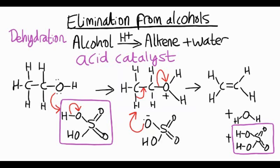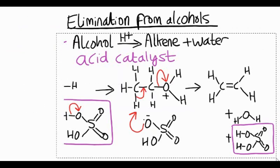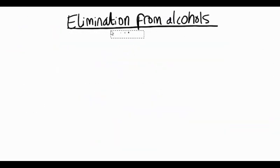Let's have a look at what happens if we do elimination from an asymmetrical alcohol. This is a slightly more complicated example. We'll use butan-2-ol. But- means there's four carbons in the chain.